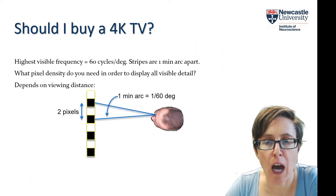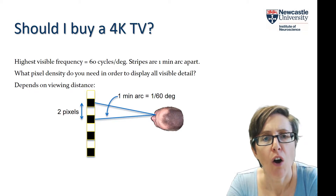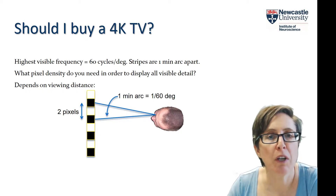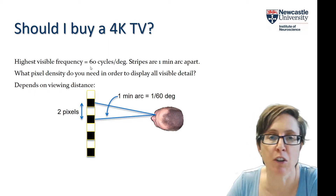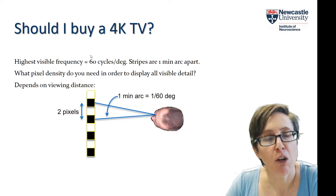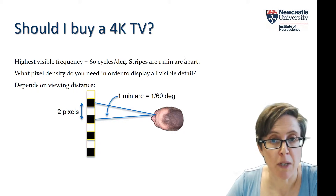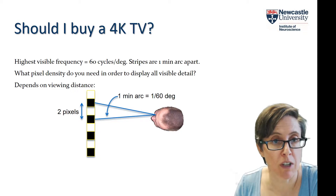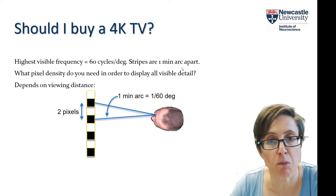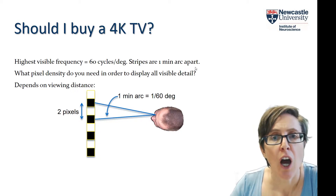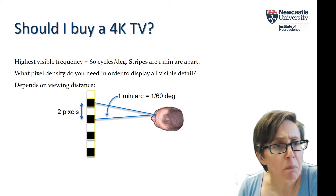Let's bring this back to a very practical everyday question: should you invest in a 4K TV? We can answer this based on the human contrast sensitivity function. Suppose the highest frequency you can see is 60 cycles per degree — that's very good vision, absolutely at the upper end of what humans can see. When you have a grating at 60 cycles per degree, one cycle spans one arc minute, and there are 60 arc minutes in one degree. So the stripes are one minute of arc apart, and if the stripes are closer than one minute of arc, your visual system just can't see them.